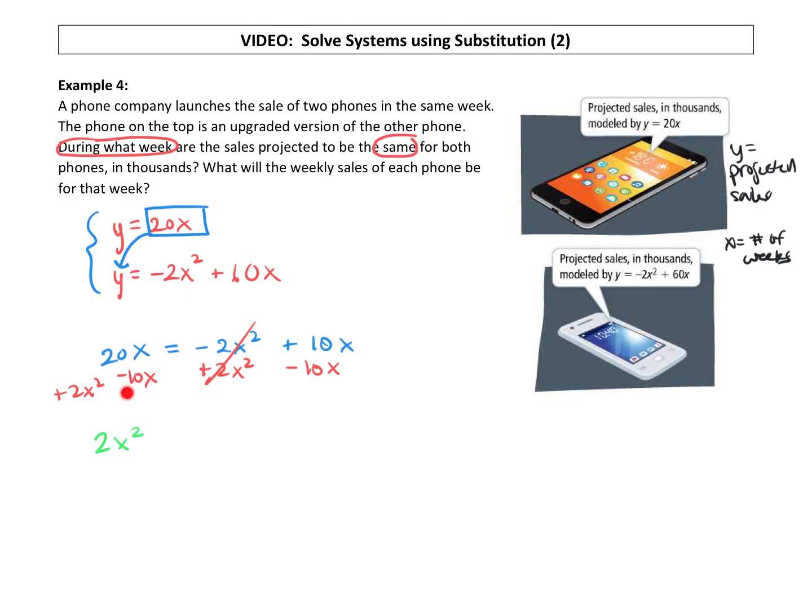And then we have this 20x minus a 10x gives us a... oh, did you see what I did? Oh, did you catch my mistake? I sure hope you did. All right. 10x. I have no idea. Sloppy handwriting. This is a 60.